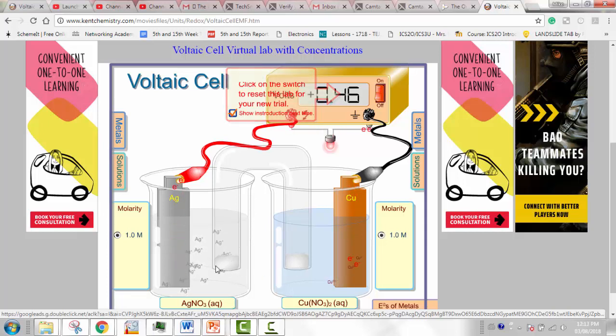Now you can see what's happening. The silver is coming out of solution and moving to the electrode where it's accepting the electrons and that's resulting in an increase in mass in the silver electrode.